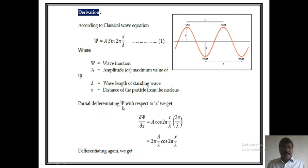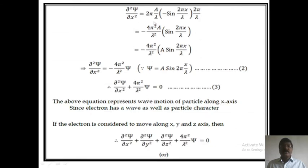Partially differentiating ψ with respect to X, Y, Z, we get: ∂ψ/∂x = A cos(2πx/λ) × (2π/λ), which equals (2πA/λ) cos(2πx/λ). Again differentiating, we get: ∂²ψ/∂x² = (2πA/λ) × (−sin(2πx/λ)) × (2π/λ), which equals −(4π²A/λ²) sin(2πx/λ), which equals −(4π²/λ²) × A sin(2πx/λ).